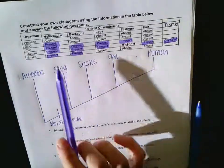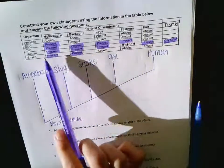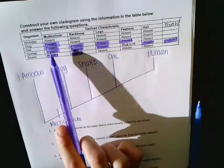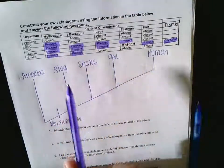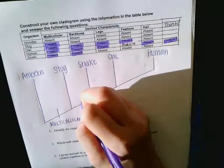What separates a slug from a snake? Let's double check it. Yes, a slug does not have a backbone but a snake does, so we're going to draw that right here.